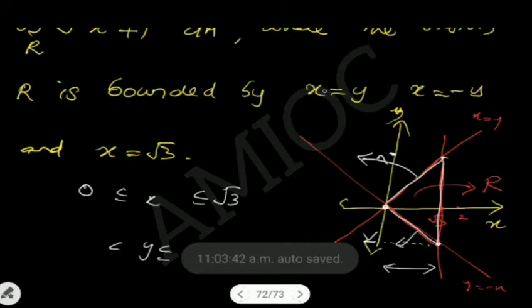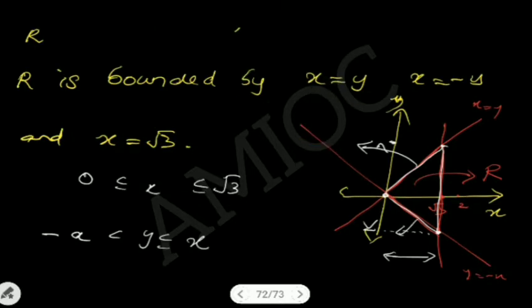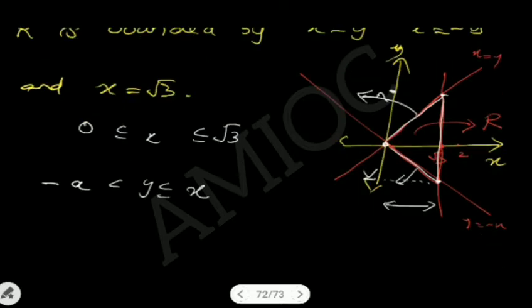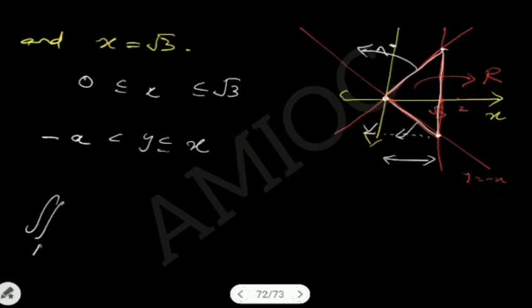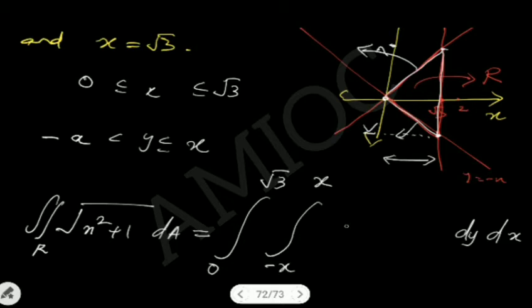So x varies from 0 to root 3, and y varies from minus x to x. The order of integration is: first integrate with respect to y, with y varying from minus x to x, and the function is root of x squared plus 1.